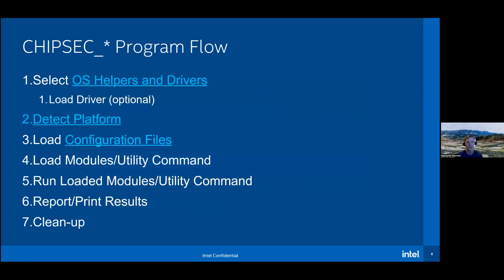The general program flow: when you run chipsec_main or chipsec_util, it identifies your environment, loads the appropriate helpers and drivers, detects your platform (CPU, PCH, etc.), loads the corresponding configuration files, loads the modules or utility you want to run, executes them, produces a report, and then cleans up the kernel module.